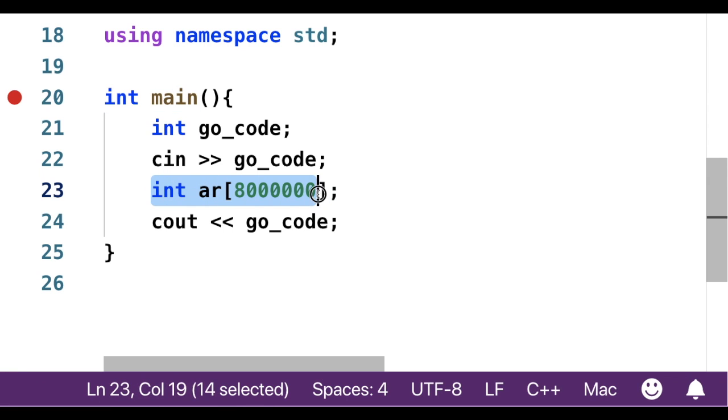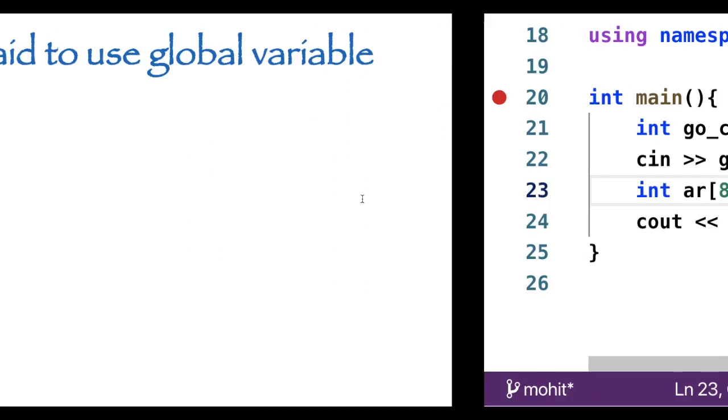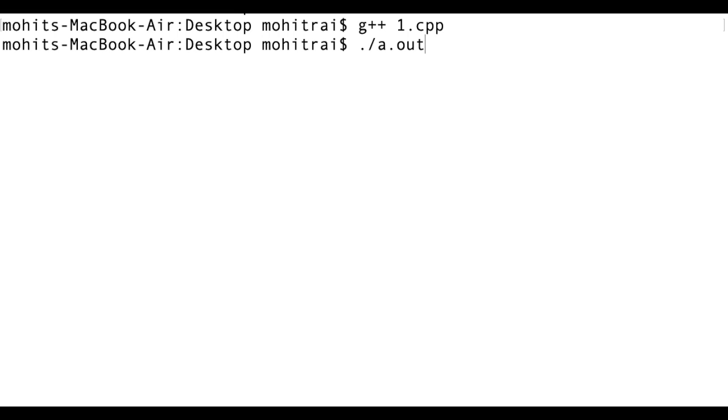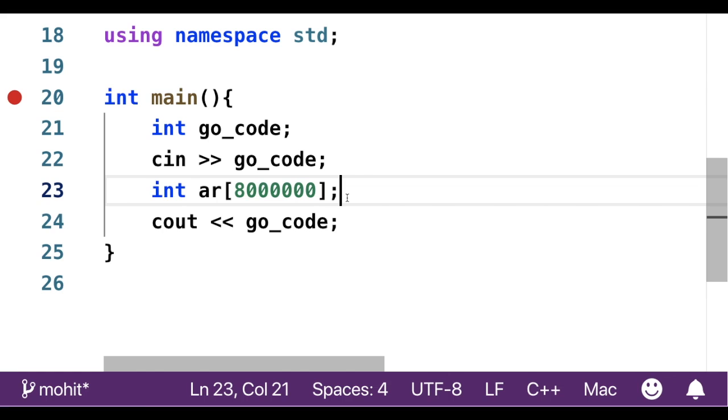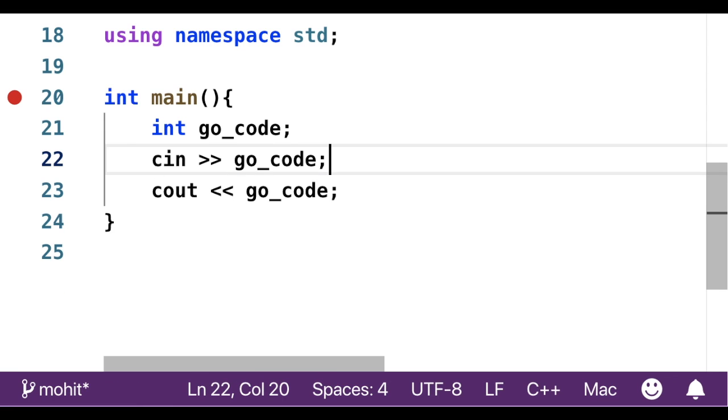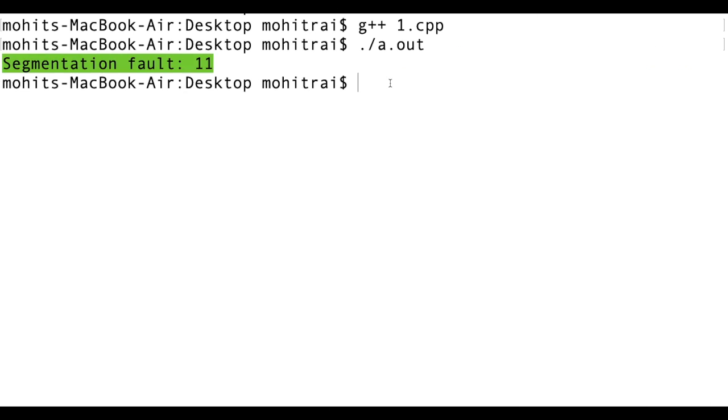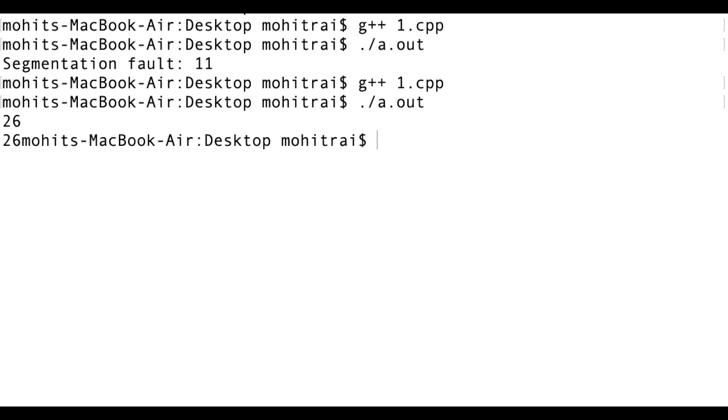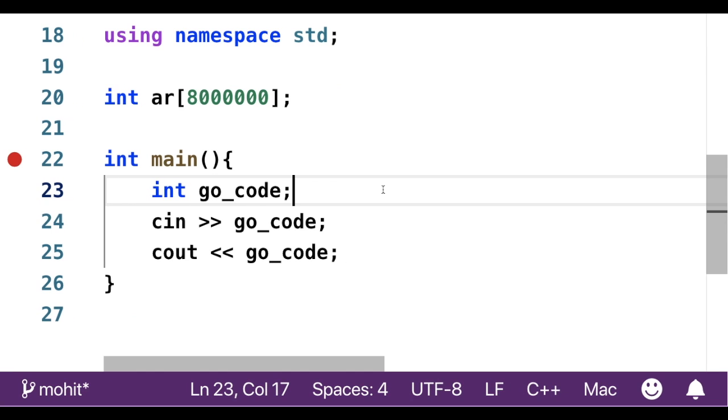Like this, here I make an array of the order of 10 to the power 7. Let's see what happens if I compile this code. This code will give segmentation fault, so we cannot use a local array of this size. Let's see what happens if I make this array global. This will work. This means we can make a global array whose size can be of the order of 10 to the power 7.